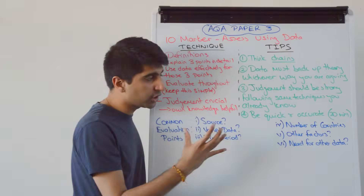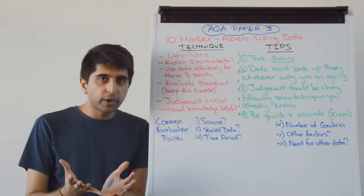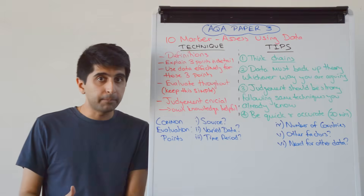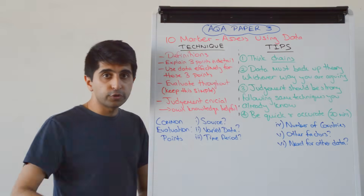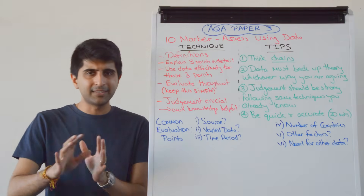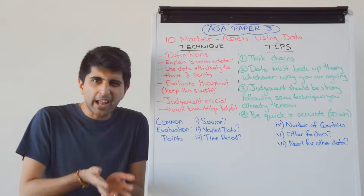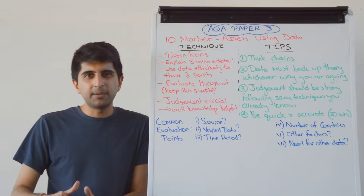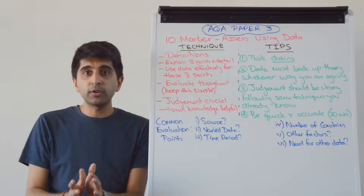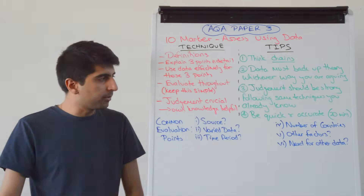When it comes to evaluation throughout and in your judgment, what kind of evaluative points can you make on a data question? You can always question the source of the data — where has it come from? Can we trust it? Is it biased, for example from a newspaper with an agenda? Is it reliable? Maybe there's no source at all, in which case you can critique that. Is the source varied, or very narrow? Is the time period just a snapshot from one year or a month? You can question whether the time period is too narrow.